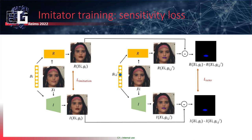The imitator is trained using a sensitivity loss, whose role is to make the imitator as sensitive to parameter variations as the original black box renderer. The first term compares the renderer output to the imitator output, and a second term compares the difference in renderer output with the output corresponding to a variation of one component of the graphic parameters. The sensitivity loss allows the imitator to better represent the variation effect of all parameters.